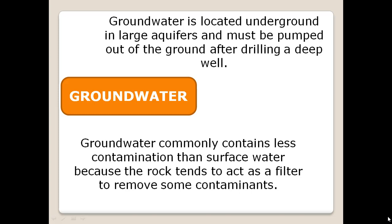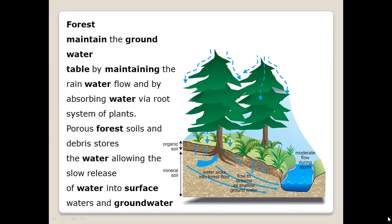Unlike surface water, groundwater commonly contains less contamination because the rock tends to act as a filter to remove some contaminants. Forests also help maintain the groundwater table by maintaining rainwater flow and by absorbing water through the root systems of plants.